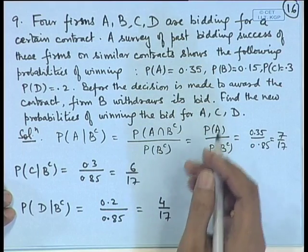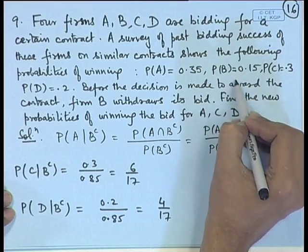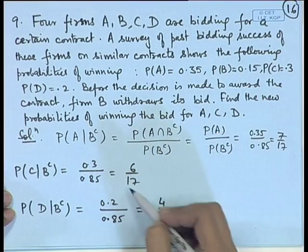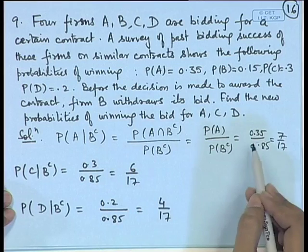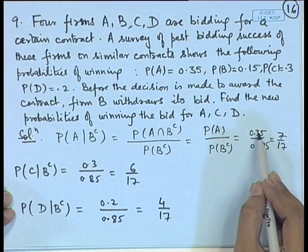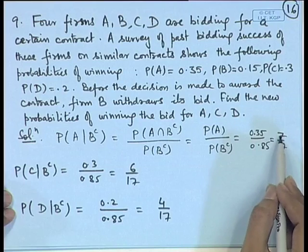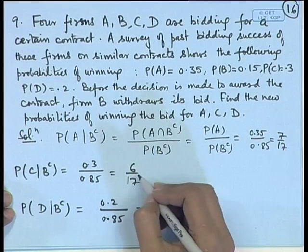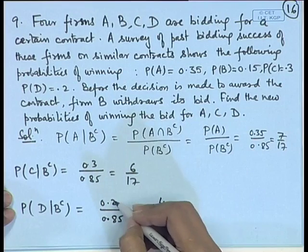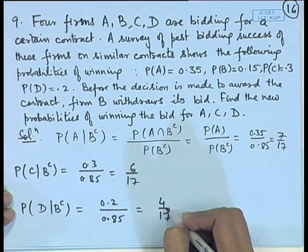If B has withdrawn, its share of probability is allocated to the other three bidders, and that is why the probabilities are modified. In place of 0.35, A's probability becomes slightly more; in place of 0.3, C's becomes slightly more; and in place of 0.2, D's becomes slightly more.